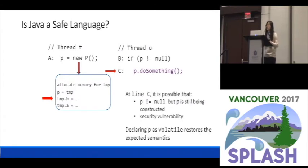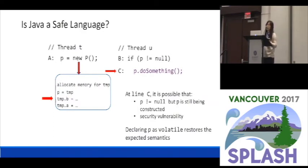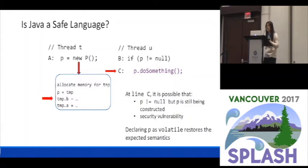Now to fix this kind of problem, one thing you can do is declare P as volatile. In Java, if you declare some variable as volatile, it will disable optimizations that reorder instructions related to this variable. That's how you can get the per-thread program order, and that's how you can restore the expected semantics.